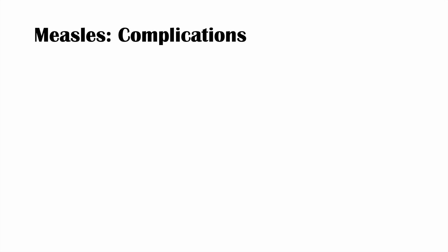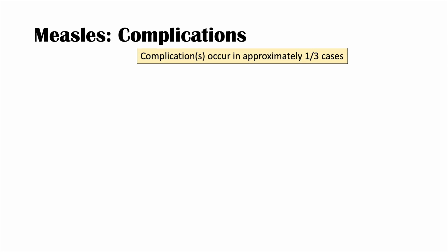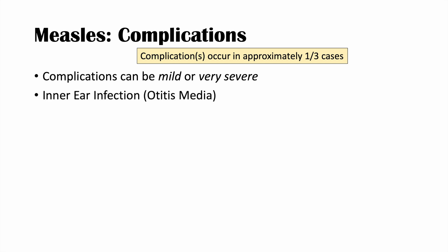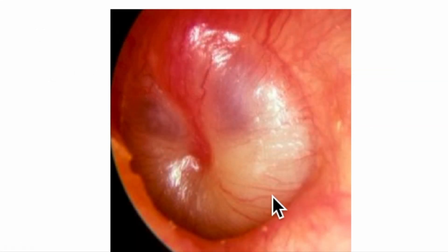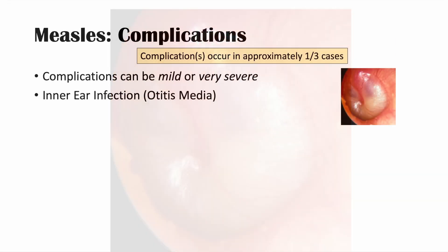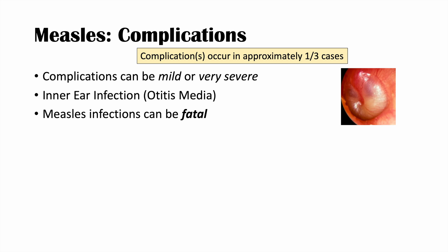Complications can occur in anybody who has been infected with measles and are quite common, occurring in approximately one third of cases. Complications can be mild, severe, or very severe. Some of the milder ones include an inner ear infection like otitis media — here's an image of a tympanic membrane with pus behind it causing a bulging membrane. But measles infections can be fatal, with fatality rates highest in developing countries, estimated at four to ten percent.